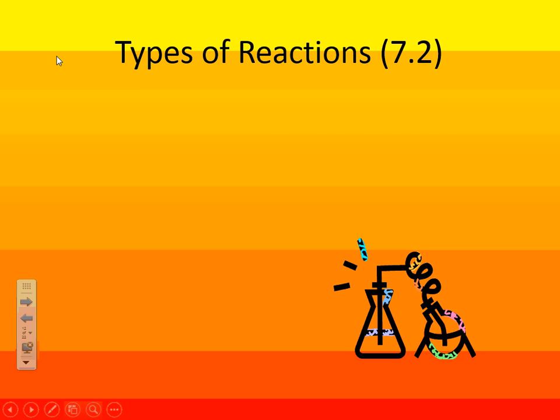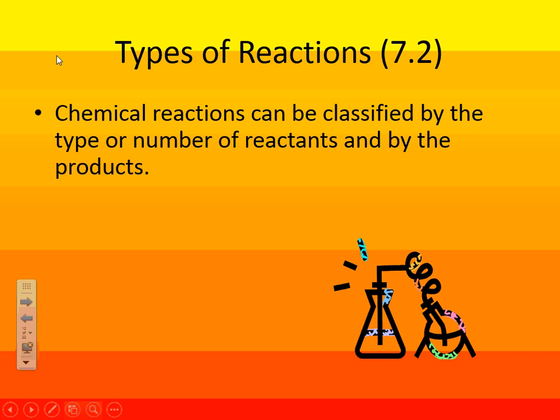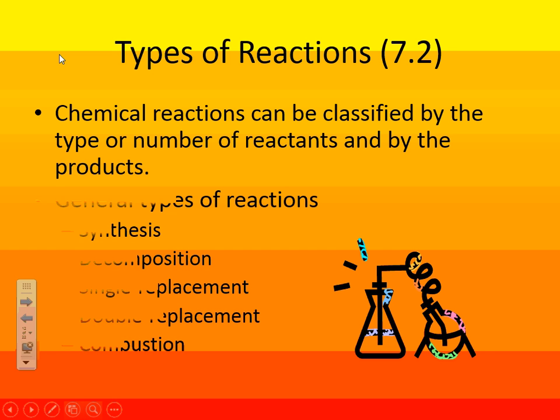In chemistry, there are what we call five types of major reactions. Remember, reactants are to the left of the arrow, products are to the right of the arrow. Today, in this section, we'll go through two types, and the next section, we'll finish off the last three.